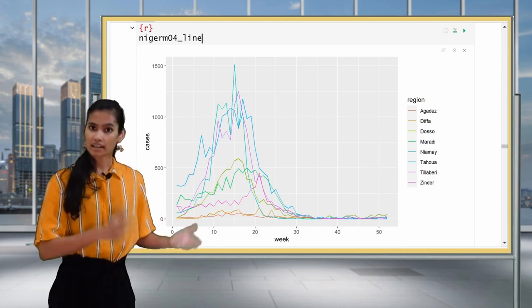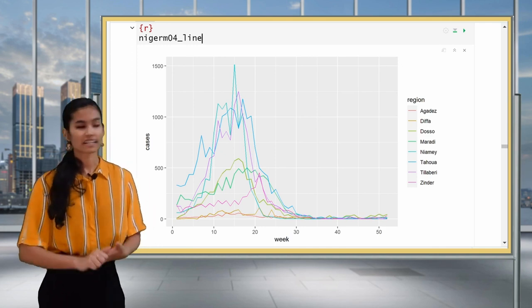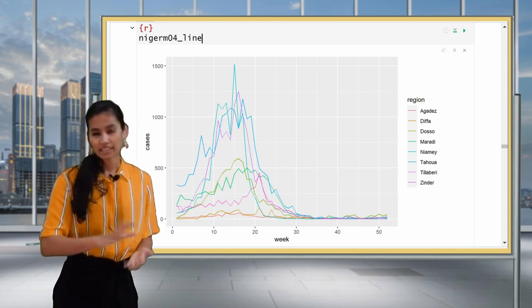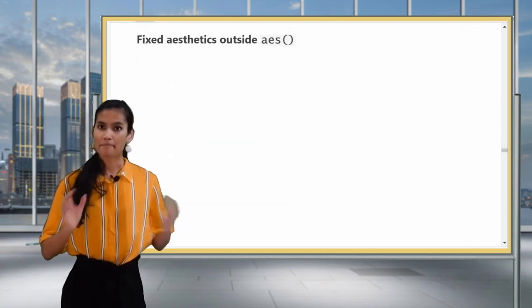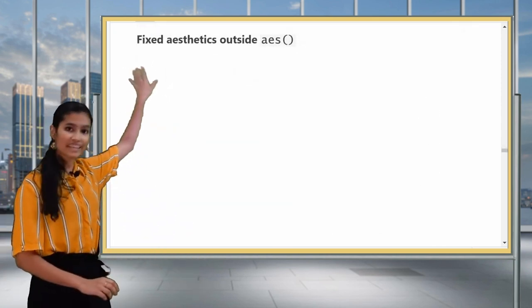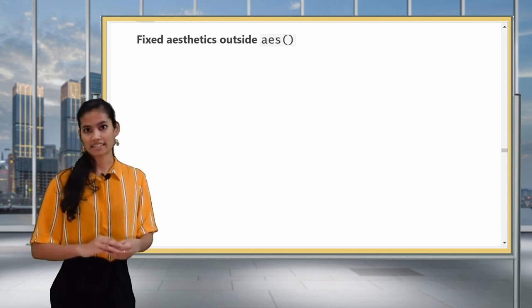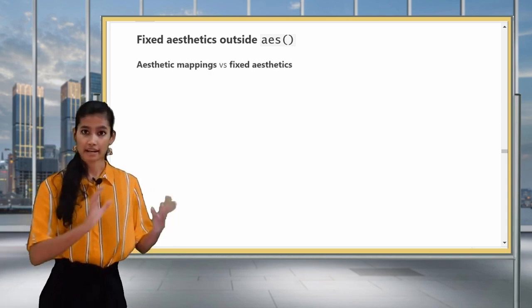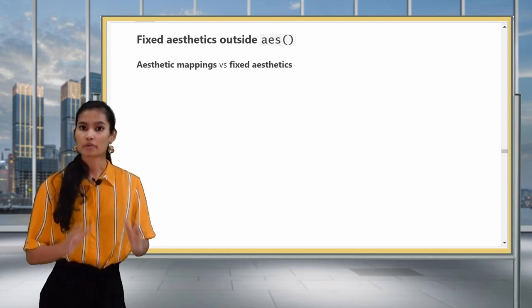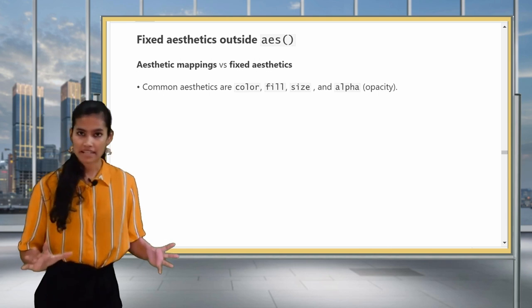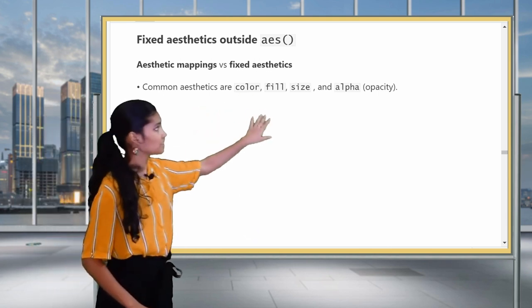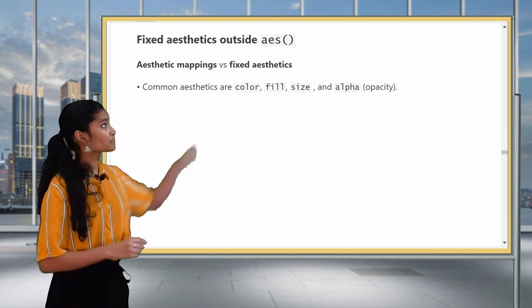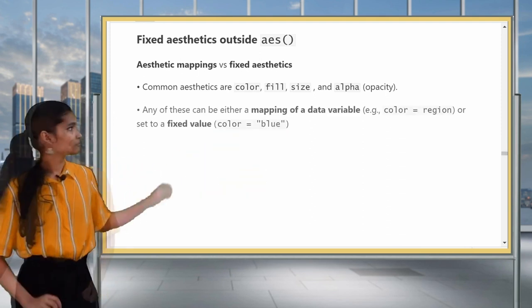So far we've been matching color, or fill in the case of bar charts, to the region variable so that the data from each region is mapped with a different color. Those are known as aesthetic mappings, but we can also look at fixed aesthetics, which are a different kind of aesthetic modification to make to a plot. It is very important to understand the difference between aesthetic mappings and fixed aesthetics, and how and when to use them. Some of the most common aesthetics we'll use in ggplot2 are color, fill, size, and alpha.